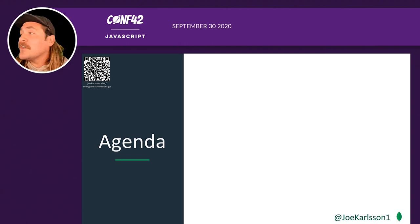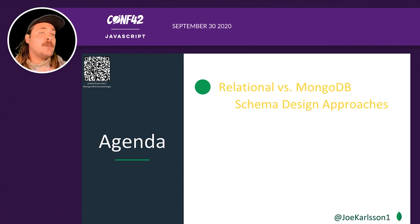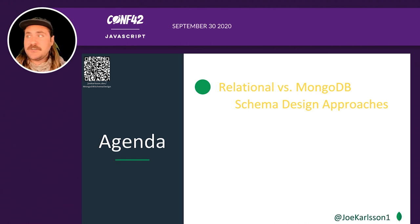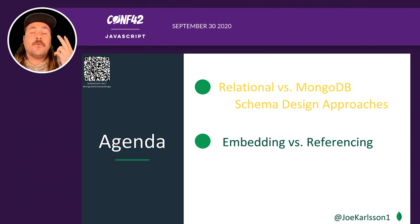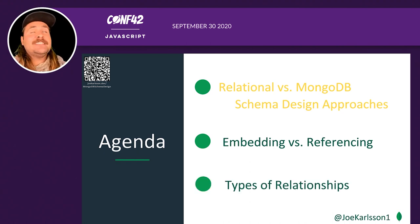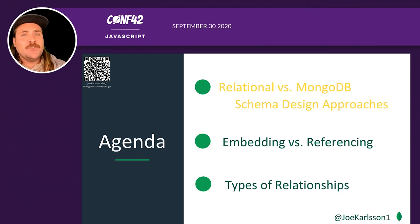What are we going to talk about today? First, we'll be talking about traditional relational SQL-type databases and comparing those to MongoDB databases from a schema design approach. Next, we'll discuss embedding versus referencing — the two key ways of organizing a schema in MongoDB. And lastly, we'll discuss lots of different types of database relationships and how to model those in MongoDB.